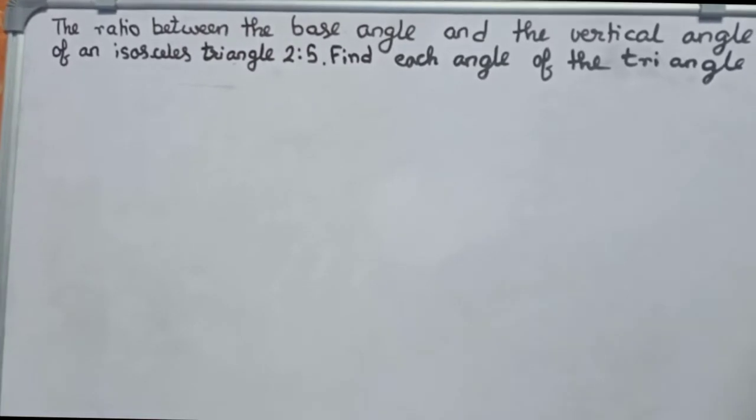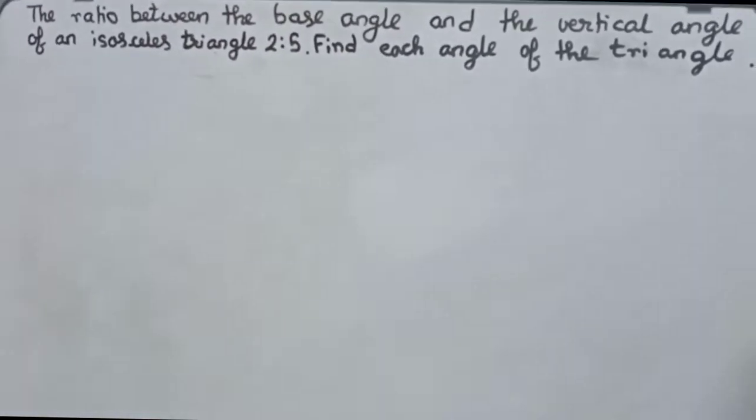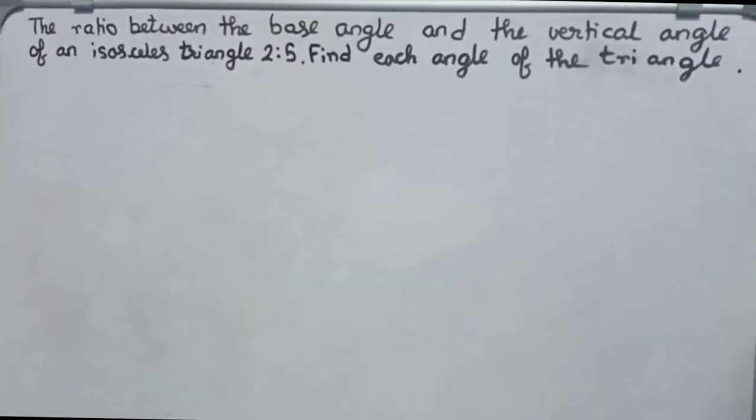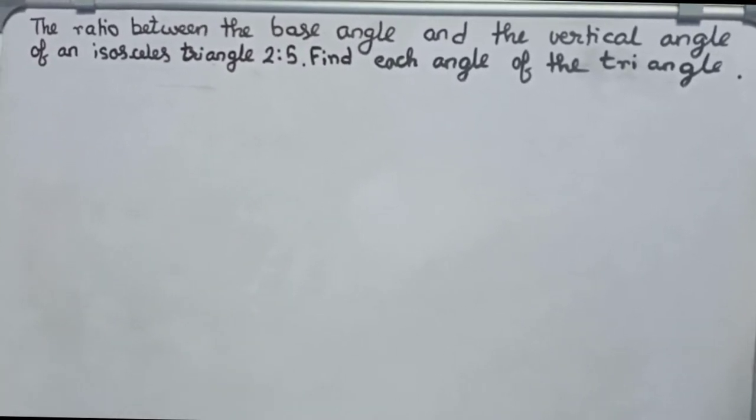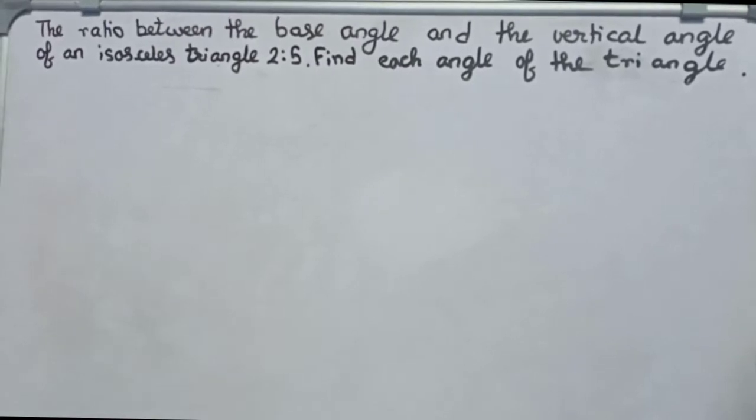Hello guys, welcome to this video. In this video, our question is: the ratio between the base angle and the vertical angle of an isosceles triangle is 2:5. Find each angle of the triangle.